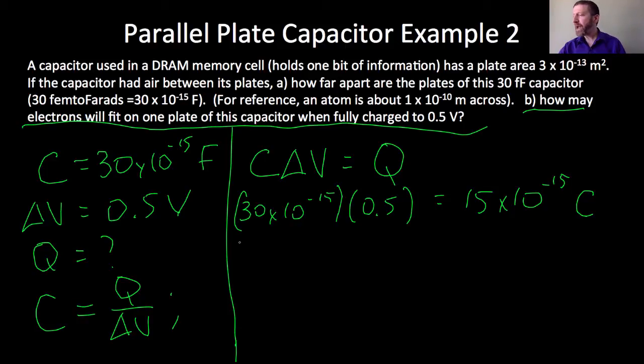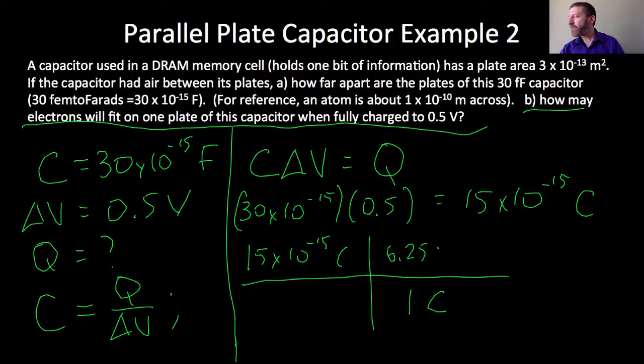So to figure out how many electrons, I've got to do factor label. 15 times 10 to the negative 15 coulombs. And I happen to know off the top of my head that 1 coulomb down here is 6.25 times 10 to the 18 elementary charges. And when I do that, I get the following. To 2 sig figs, I'm getting 94,000 electrons.